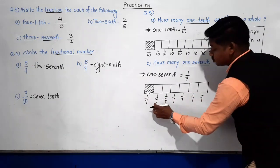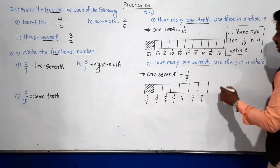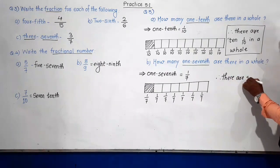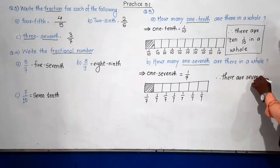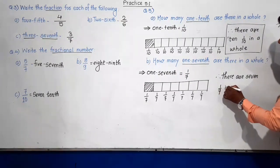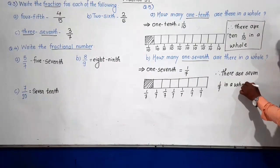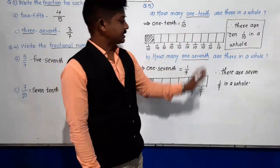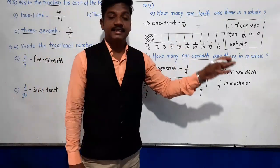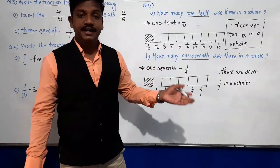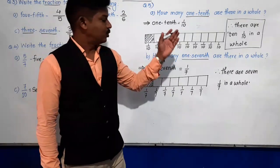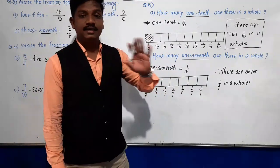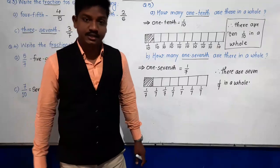So how many one-sevenths are there? One, two, three, four, five, six, seven. There are seven one-sevenths in a whole. Similarly, suppose the question asks: how many one-eighths are there in a whole? Then there will be eight one-eighths in a whole. Because whatever total number of parts are there, that many one-eighths will be there in that whole chocolate or whole object.